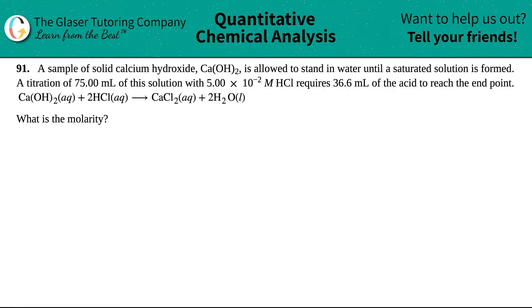Number 91. A sample of solid calcium hydroxide, which is Ca(OH)₂, is allowed to stand in water until a saturated solution is formed. A titration of 75.00 mL of this solution with 5.00 times 10⁻² molarity of hydrochloric acid HCl requires 36.6 mL of the acid to reach the endpoint. And then we have this little formula right here, and they're asking for what is the molarity?